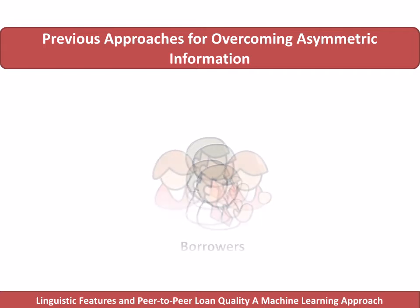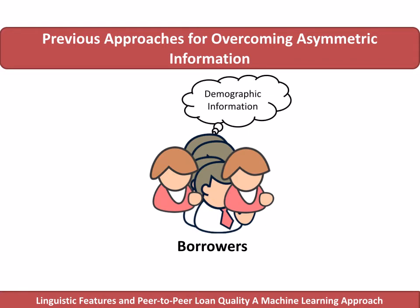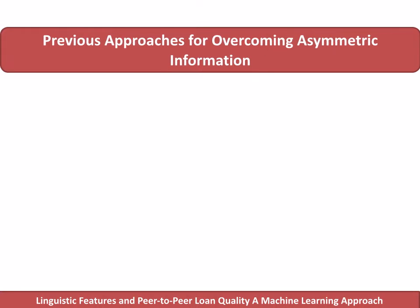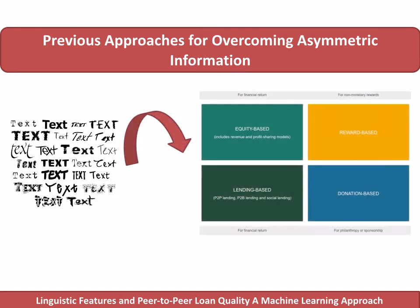Previous studies have used a variety of mechanisms to mitigate asymmetric information, including demographic, social, and financial information. However, text, which exists in all types of crowdfunding, has not been systematically studied so far to overcome information asymmetry issues. Our research tried to take a first step in filling this gap.